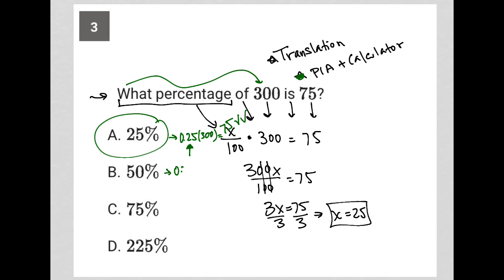Whereas here, for instance, you say, well, 0.5 times 300. Okay, that does not equal 75. And that's how you would know that that is incorrect.